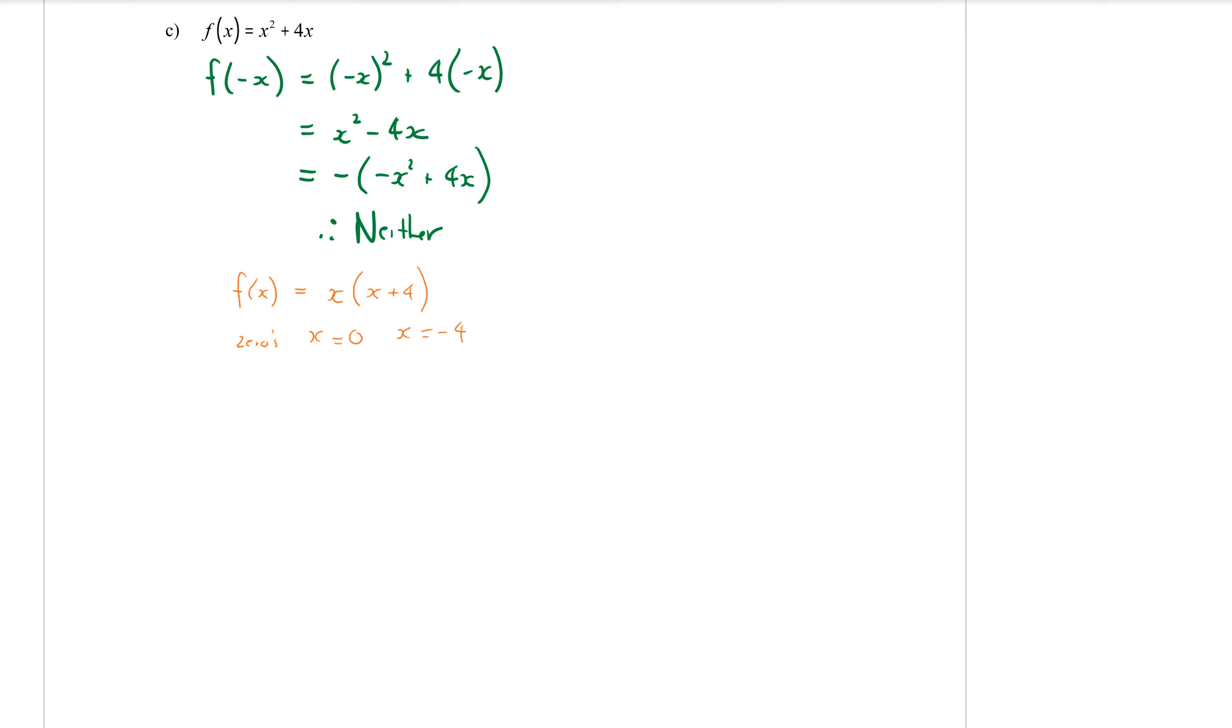Now this is a parabola on our Cartesian plane at negative 4 and at 0. Okay so because it's a parabola I'd like to find my vertex which would be at x equals negative 2. If I sub in x equals negative 2, then I would get negative 2 squared plus 4 times negative 2 which gives negative 4.